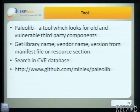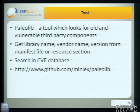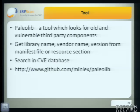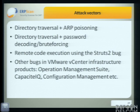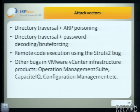During penetration testing we often have big systems and applications with a lot of library dependencies. I thought it would be useful to have a tool to quickly find vulnerable libraries. So I wrote this tool — it gets the library name, gets its version, and searches the CVE database. Currently it uses the standard CVE database, but in the future I'd like to build my own database. So there are four attack vectors against vCenter: directory traversal plus ARP poisoning, directory traversal plus password decoding for Orchestrator, and remote code execution using the Struts bug.